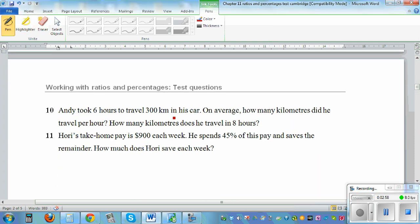Andy took 6 hours to travel 300 kilometers in his car on average. How many kilometers does he travel per hour? In 6 hours he travels 600, so per hour, that is 1 hour, he travels 300 divided by 6, which is 50 kilometers per hour.